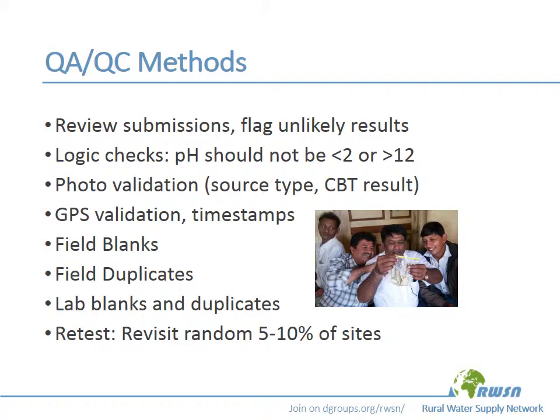There are a number of different ways that we can implement QAQC methods into routine monitoring. This includes regularly reviewing submissions in a timely manner and flagging results that look improbable, as well as applying logical checks. For example, we know the range within which pH values should fall, and if we start seeing lots of entries of pH values of 0, 1, or 20 — impossible or implausible values — we know it's very likely that we have a problem somewhere. Photo validation can be very useful, so anywhere that enumerators are measuring or observing something we can photograph — for example, water source type — we can go back and check a subset of those photos against the recorded responses to ensure high quality data. GPS coordinates and timestamps can be recorded every time a water quality sample is collected and analyzed, to confirm that samples are being collected where and when we think they are.